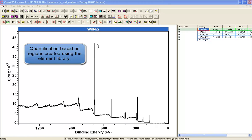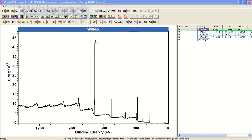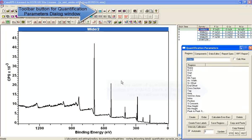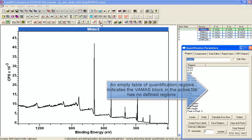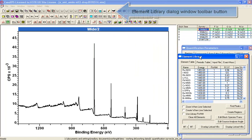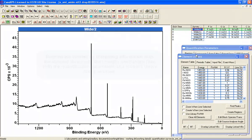While it's possible to manually create regions using the Quantification Parameters dialog window to quantify a survey spectrum, what we'll do now is look at the element library and how to manage the creation of regions based on the element library.